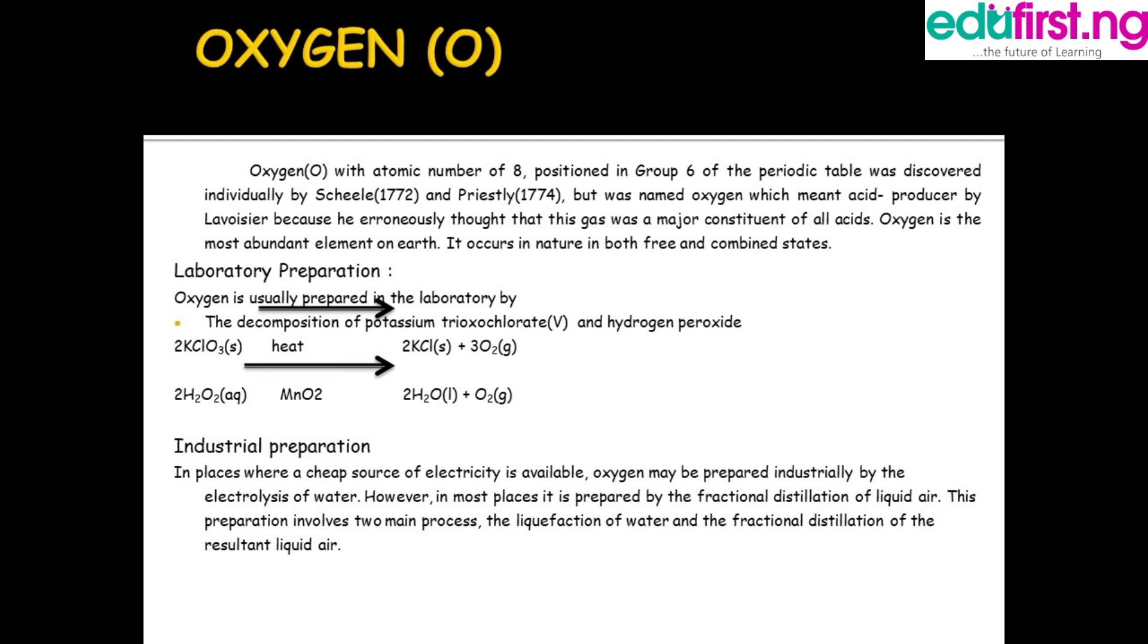What is the laboratory preparation of oxygen? How can oxygen be prepared in the lab? Oxygen is usually prepared in the lab by the decomposition of potassium trioxochlorate(V) and that of hydrogen peroxide. The decomposition means the breaking down of potassium trioxochlorate(V) in the presence of heat, so it gives us potassium chloride and also oxygen gas. The same with hydrogen peroxide, which gives us water and oxygen gas.